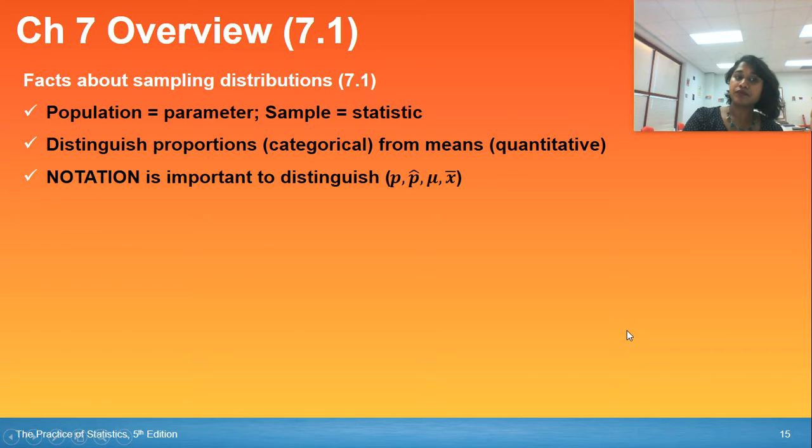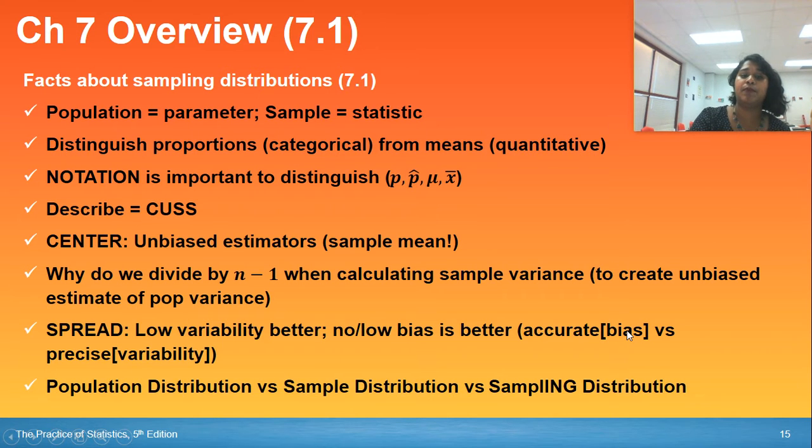So chapter 7.1, these are all the facts you should have picked up about chapter 7.1. Facts about the introduction to sampling distribution, population parameters, sample statistics. Can you distinguish proportions from means? Notation, notation, notation.